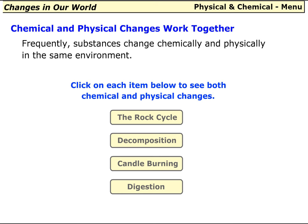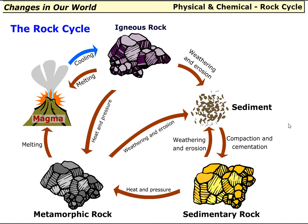Chemical and physical changes work together frequently — substances change chemically and physically in the same environment. Let's look at each item to see both chemical and physical changes. The rock cycle: there are three main types of rock.